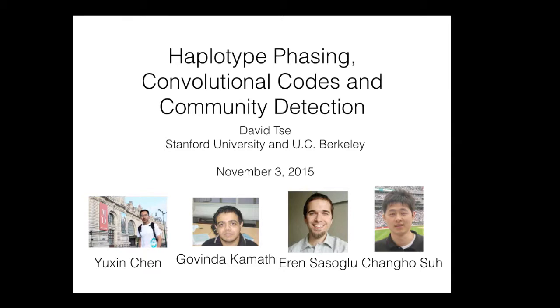Thank you very much, Sri Ram, for the kind introduction. If you don't know what these three terms mean, I hope by the end of the lecture you understand what these three things are. This talk is about three subjects from three different fields — communication, computational biology, and social networks — and the goal is to understand the connection between the three. Our original motivation is the haplotype phasing problem. I usually like to start from a concrete engineering problem and go from there.